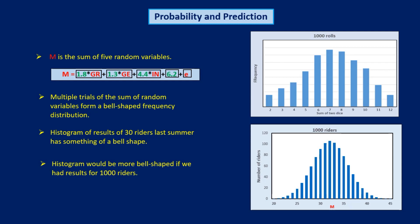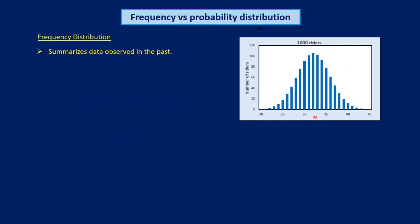But before we can do this, I need to explain the difference between a frequency distribution and a probability distribution. A frequency distribution is commonly used to summarize data that has been observed in the past. The x-axis of a frequency distribution shows the range of observed outcomes. The y-axis shows the number of times each outcome was observed. That's the frequency of the outcome.